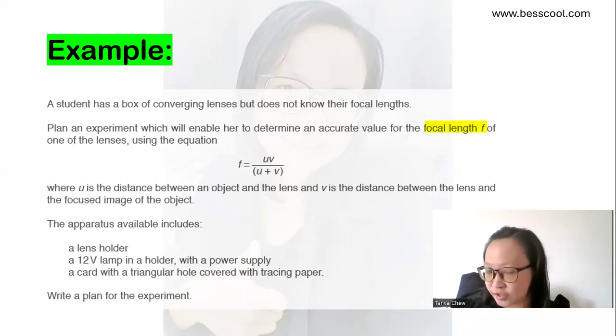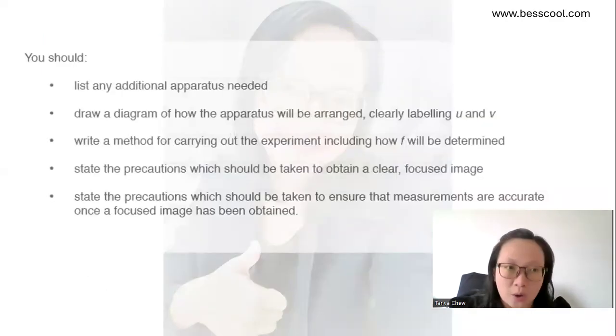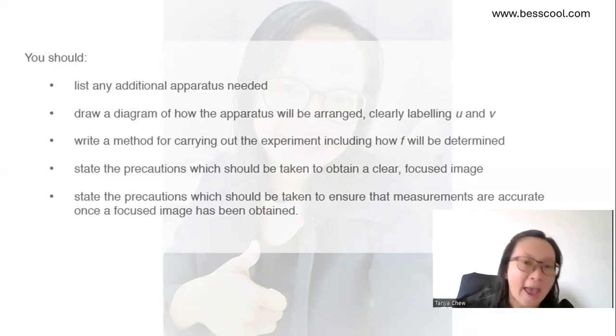So once I read that, no skip reading. Can you see that? So you should list any additional apparatus needed, draw a diagram of how the apparatus will be arranged, clearly label your U and your V, write a method for carrying out the experiment, including how F would be determined, and state the precautions which should be taken to obtain a clear and a focused image. State the precautions which should be taken to ensure that the measurements are accurate once a focused image has been obtained. So all these things here must be written down in order for you to obtain that seven marks.